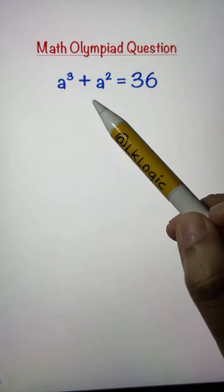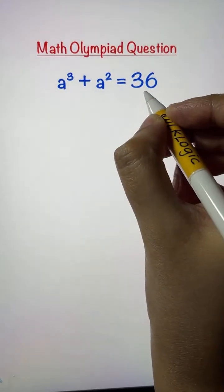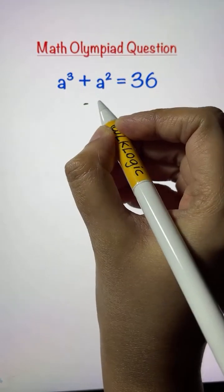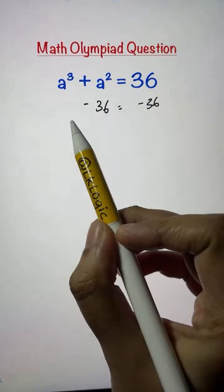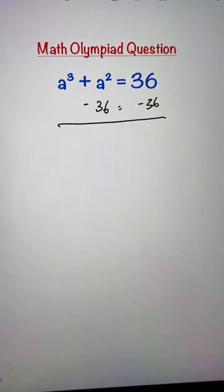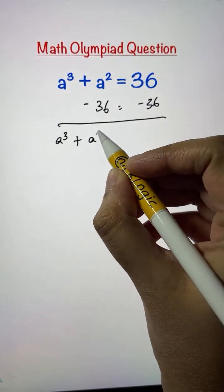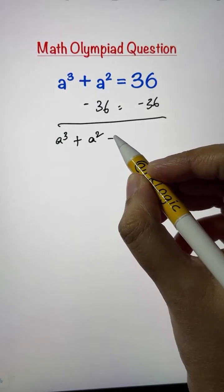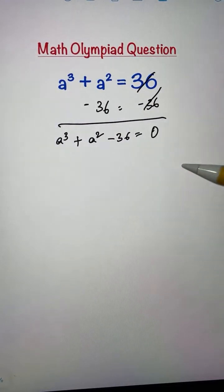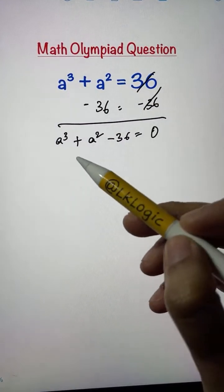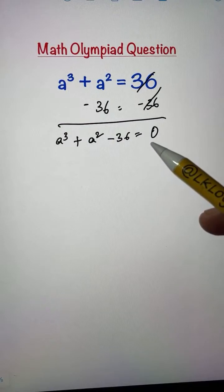To solve a cubic equation, we usually bring all the terms to the left-hand side. So we're going to do the same thing here — subtract 36 from both sides. What we get after subtracting is: a cubed plus a squared minus 36 equals zero.